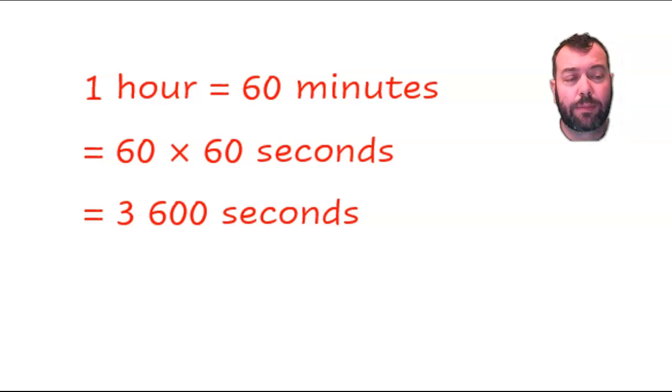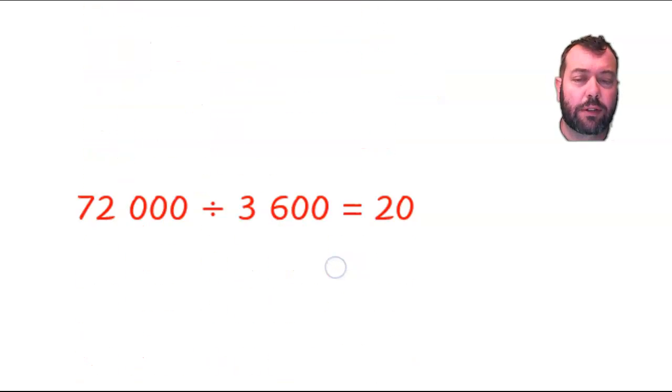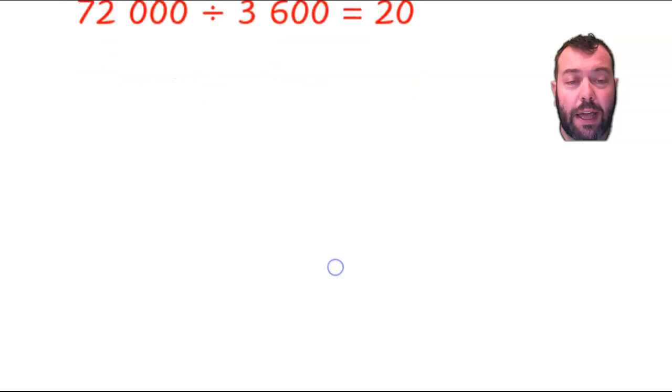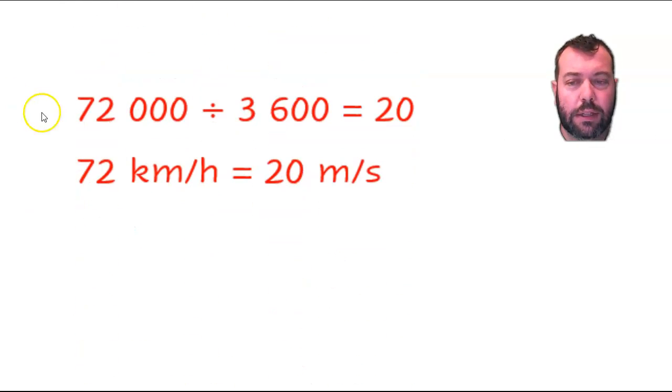Okay, let's see this here. Punch that into our calculator and we get 20 out. So don't forget the units there: 72,000 divided by 3,600 equals 20.